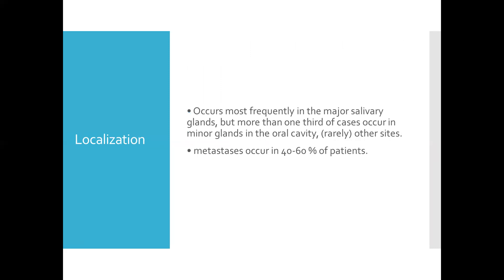Regarding localization, ACC occurs most frequently in the major salivary glands, but more than one third of cases occur in the minor glands of the oral cavity, and rarely in other sites. The major salivary glands include the parotid, submandibular, and sublingual glands. Minor glands of the oral cavity include the labial, buccal, glossopalatine, palatine, and lingual glands. Other sites include the trachea, lacrimal gland, breast, skin, and vulva.